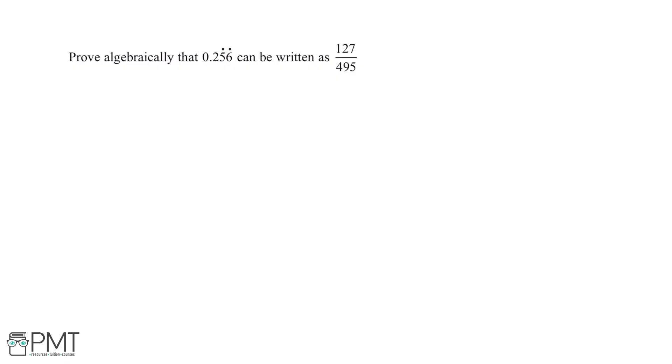Prove algebraically that 0.256 reoccurring can be written as 127 divided by 495.